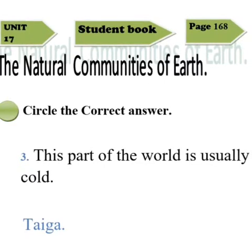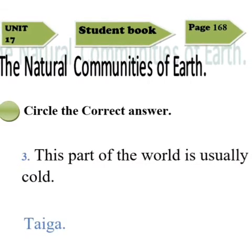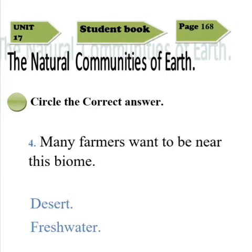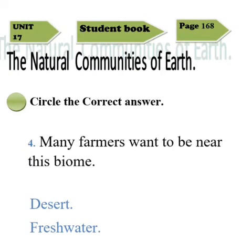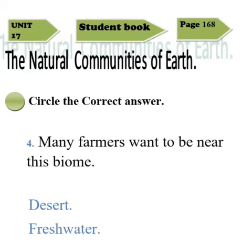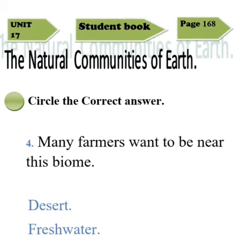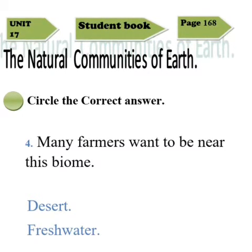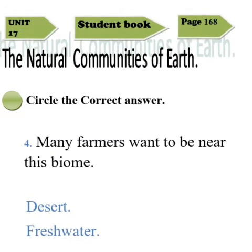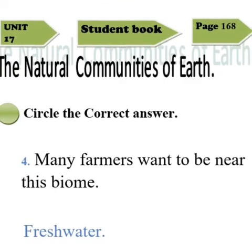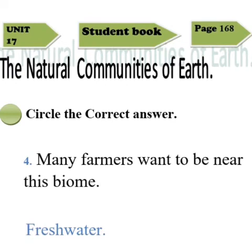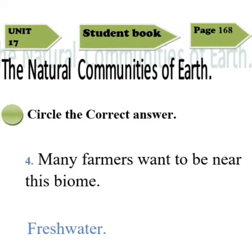So the correct option is taiga. Circle taiga in sentence number three. Sentence number four: many farmers want to be near this biome. A farmer is basically a person who has a farm. The given options are desert and freshwater. Nobody wants to be near the desert biome, so the correct option is freshwater. Circle freshwater in sentence four.